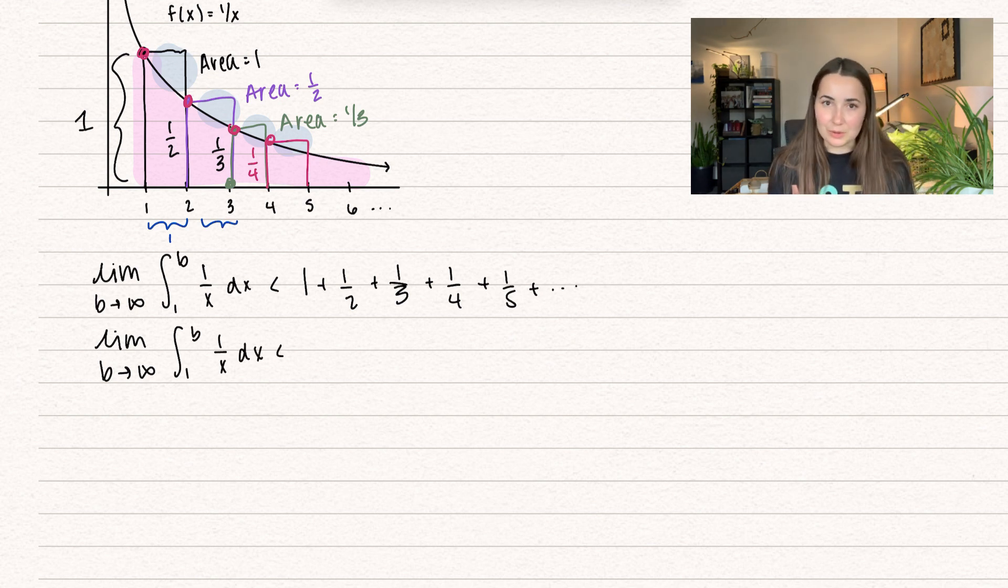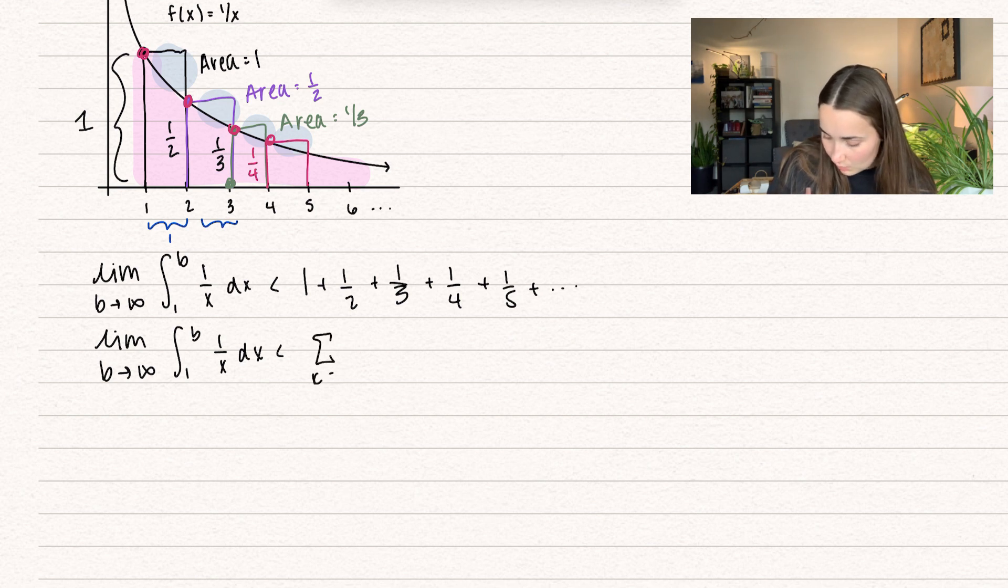What is this right side equal to? When we're adding these all together, that's the harmonic series. So this is the series from k equals 1 to infinity of 1 over k.